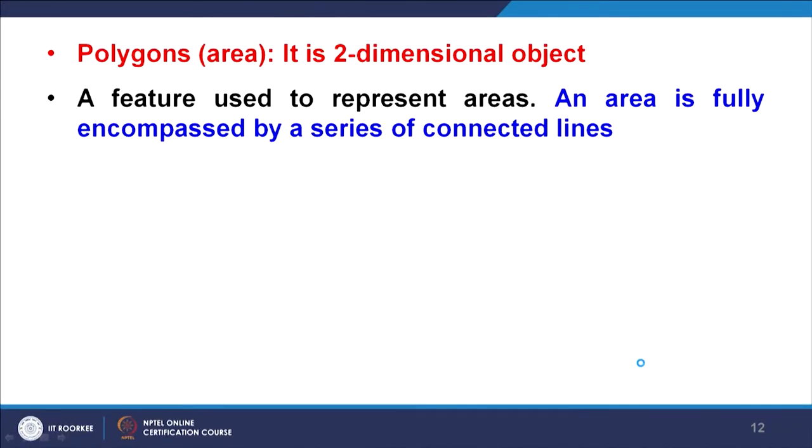Polygons or area is a 2-dimensional vector entity used to represent many features present on the surface of the earth. For example, land records or revenue records — different agricultural fields and plots will be stored as polygons. Of course, the link to scale will come again. If it is a very small scale, polygons cannot be shown as polygons — you may have to reduce them to even a point. But when it is a large scale, the polygon or area can be shown in the form of a polygon.